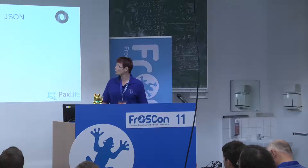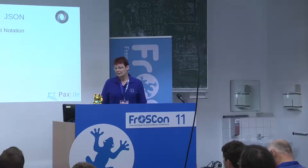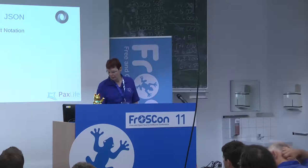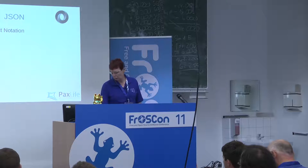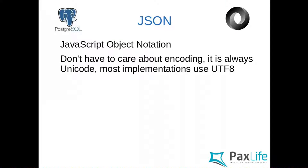Today's topic is Postgres and JSON. JSON stands for JavaScript Object Notation — simple as that. It was invented for JavaScript but is now widely used for communications and interactions between applications. We don't have to care about encoding, which is completely different compared to XML or worse things like CSVs, because JSON is defined as Unicode and most implementations use UTF-8, which is a subset of Unicode.